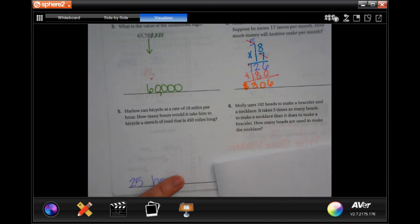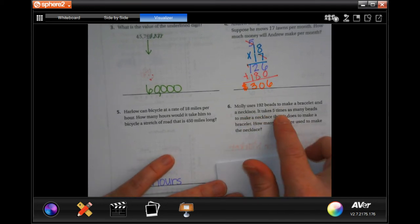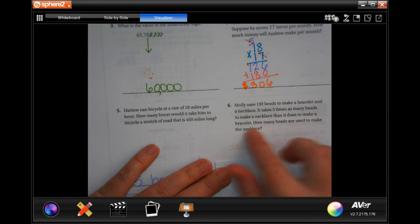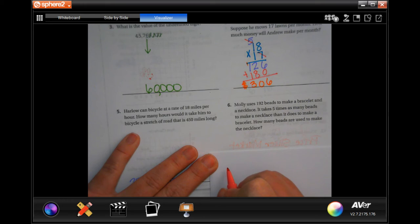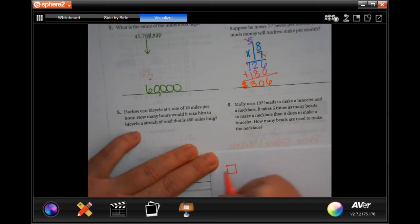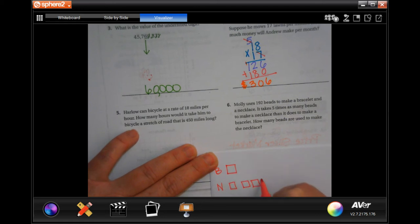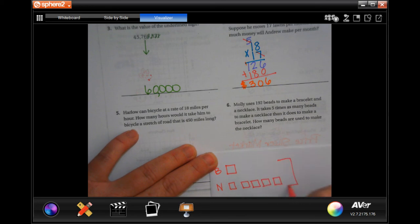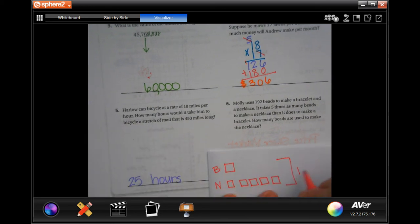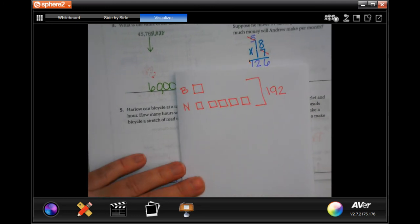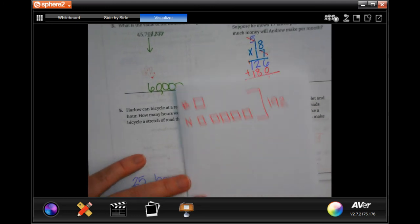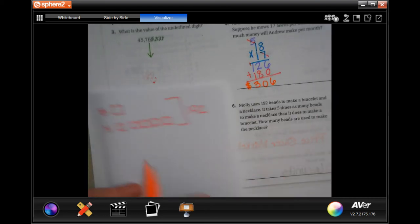Molly uses 192 beads to make a bracelet and a necklace. It takes five times as many beads to make a necklace than it does to make a bracelet. So let's see. Here is for bracelet. Necklace. It's five times more. And all together they have 192. So we need to find out how many it takes to make a necklace.